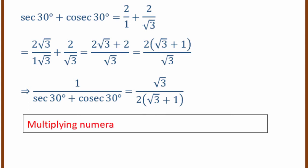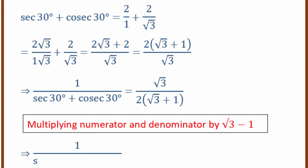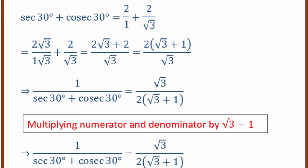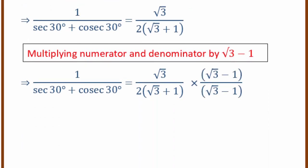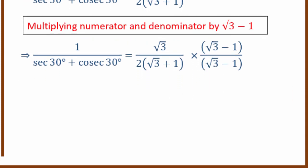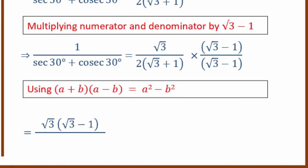The trick is to rationalize: multiply numerator and denominator by root 3 minus 1 (the conjugate). Using the identity (a plus b)(a minus b) equals a squared minus b squared, where a is root 3 and b is 1, the denominator becomes a squared minus b squared.